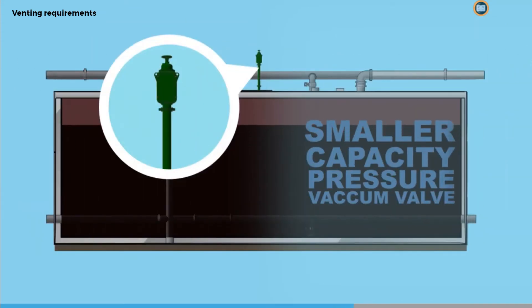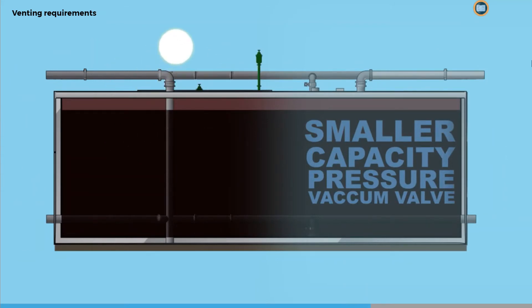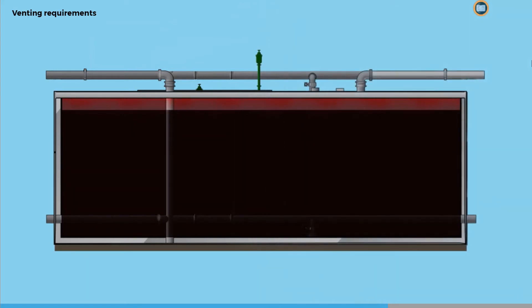However, a smaller capacity pressure vacuum valve may be fitted, though this will only be designed to cope with small changes in the volume of cargo vapor or inert gas due to thermal variation.